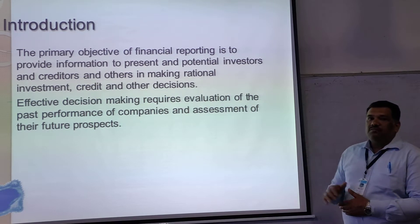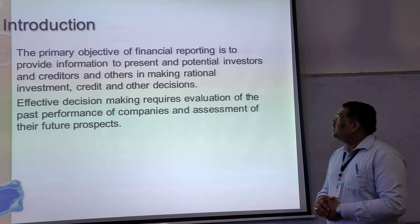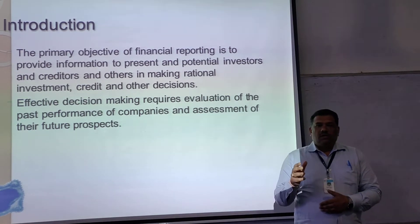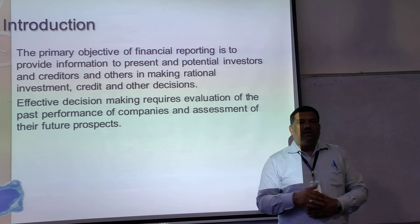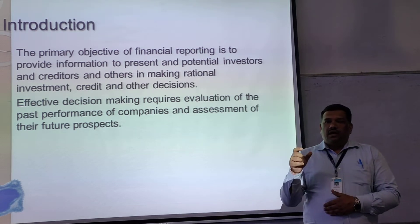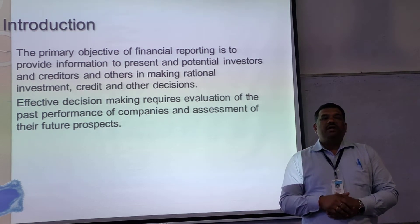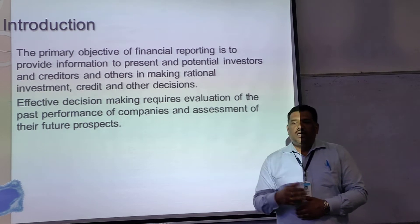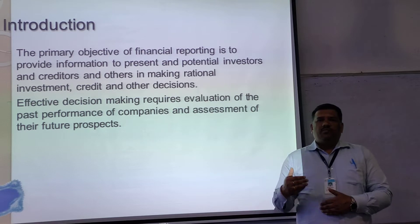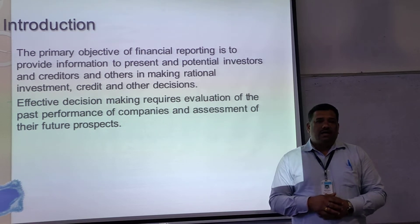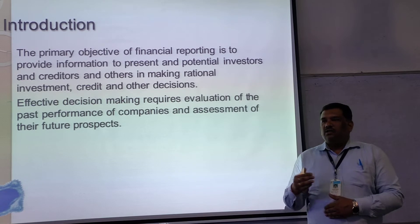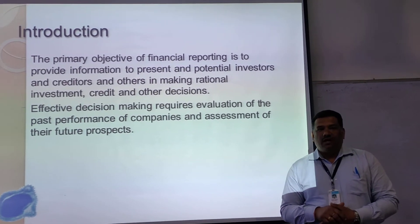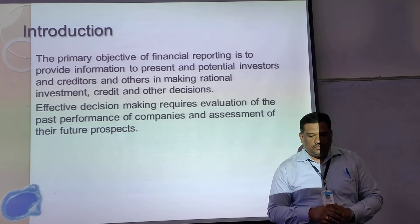The primary objective of financial reporting is to report the actual happenings or the actual state of the company. Through the income statement we come to know about the profit of the company — the gross profit and the net profit. Through the balance sheet we come to know about the asset and liability position of the company as on a given date.